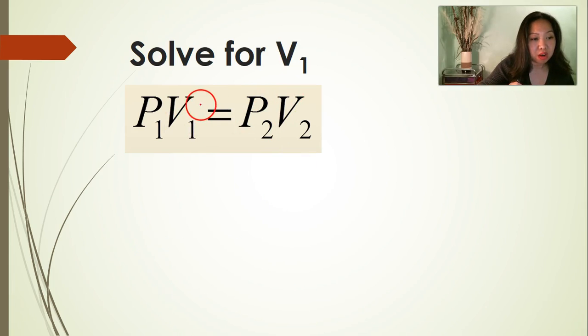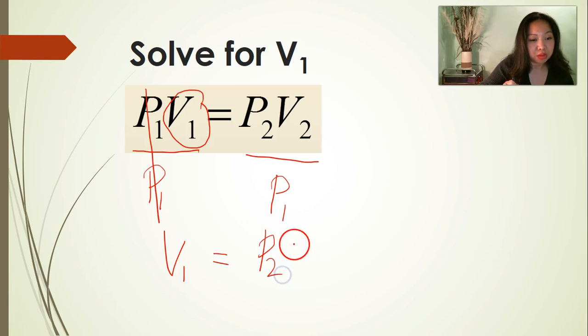Solve for V1, or the initial volume. Divide both sides of the equation by P1. Cancel P1. That leaves us with V1 equals P2 times V2 divided by P1.